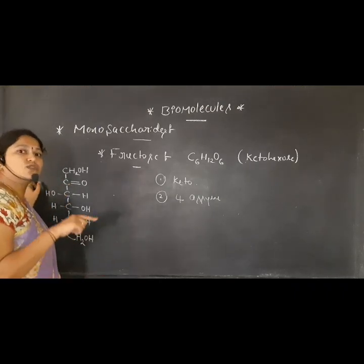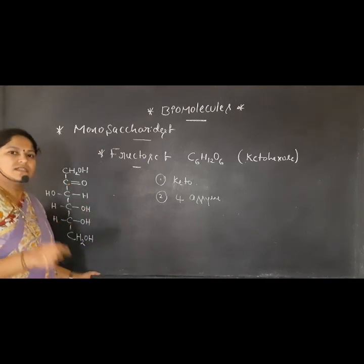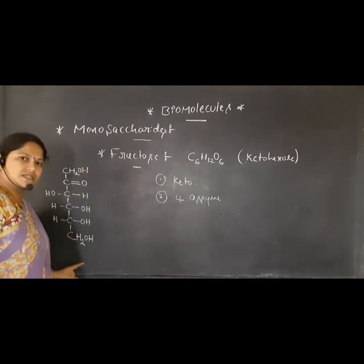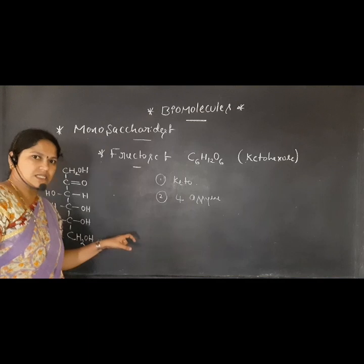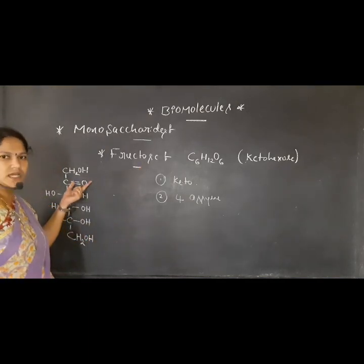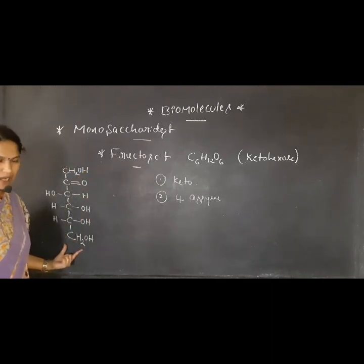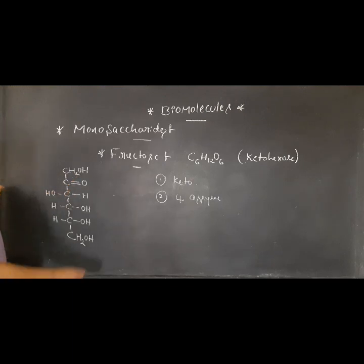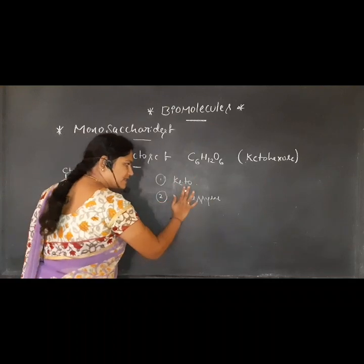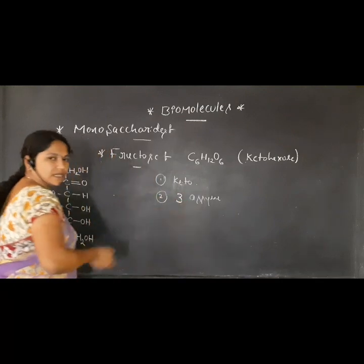Structure elucidation is not in your syllabus, so we are not going to discuss all those things. We are highly concentrated on the structure of fructose — what is the open chain structure and what are the cyclic structures. In fructose, we have one ketonic group, and whereas glucose has four asymmetric centers, fructose has only three asymmetrical centers.